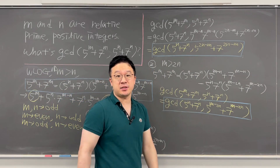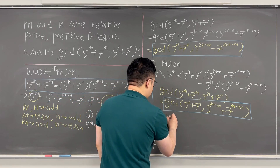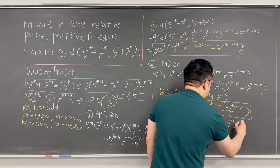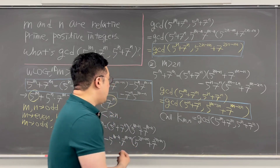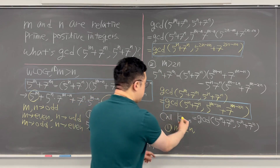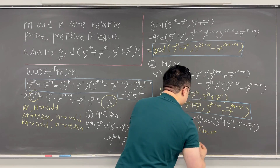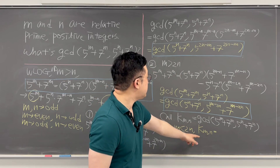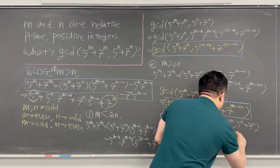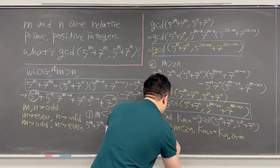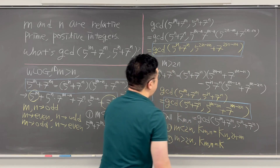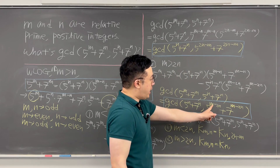Using these two cases in general, let's define k(m, n) as the GCD of (5^m + 7^m) and (5^n + 7^n). Case 1, when m < 2n, gives k(m, n) = k(n, 2n−m). Case 2, when m > 2n, gives k(m, n) = k(n, m−2n).